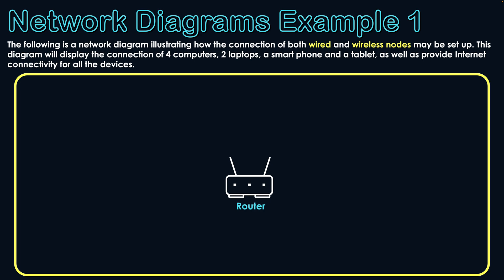I'll need the router for that internet connection and wireless connections as well. I've got many other nodes that need to connect, and those other nodes can't directly connect to a router because it doesn't have enough ports and that's not how routers are used. So the first thing that would connect to my router is a hub or switch.